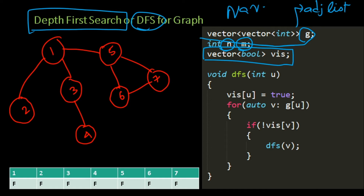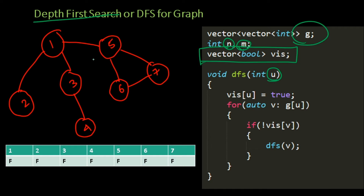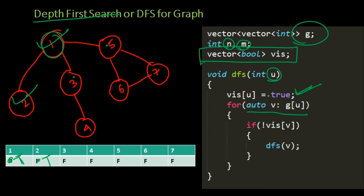Let us start our depth first search from node 1. First, we mark 1 as visited. After that, we look at each and every neighbor of 1 — which are 2, 3, and 5 — one by one. Starting with 2: is 2 visited? No, so we do another DFS from 2. The whole process repeats — 2 is marked as visited. The only neighbor of 2 is 1, but it is already visited, so we have no business continuing and we exit out of DFS(2).